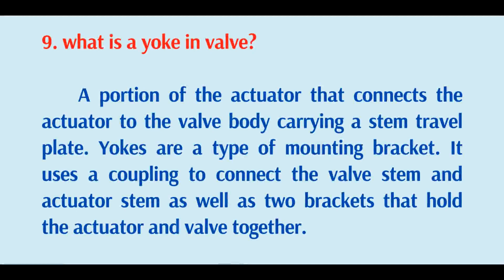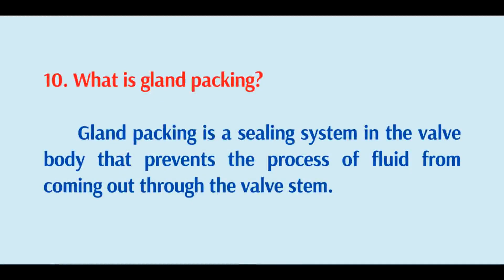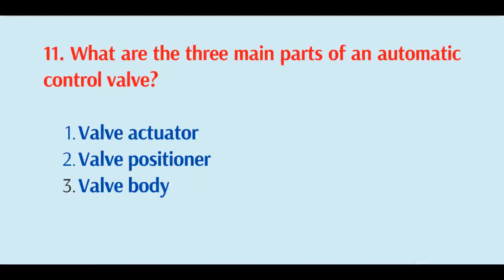What is a yoke on a valve? A portion of the actuator which connects the actuator to the valve body, carrying a stem travel plate. Yokes are a type of mounting bracket that uses a coupling to connect the valve stem and actuator stem, as well as two brackets that hold the actuator and valve together. What is gland packing? Gland packing is a sealing system in the valve body which prevents the process fluid from coming out through the valve stem.